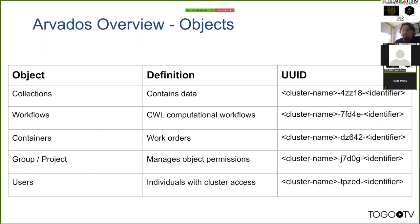This enables federation, where multiple Arvados instances can talk to one another because identifiers include their cluster of origin. The software can reason about whether an identifier represents a record it owns or one owned by another cluster, and go out and access that cluster. The second part of the identifier is the type of record, so when you have identifiers you can know what type of thing they identify.